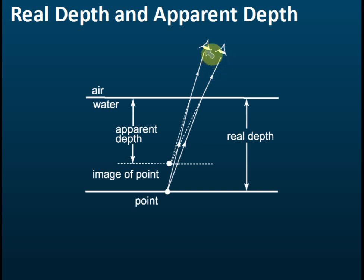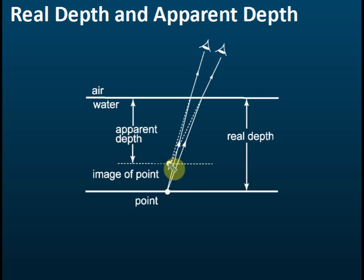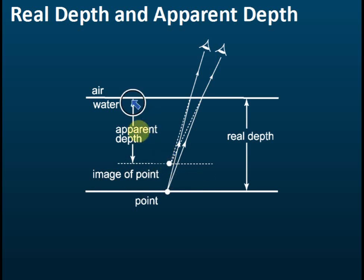So the observer always assumes that the light ray comes from here in a straight line. If it's a straight line, then it comes from a higher position. So when he sees the light rays, he concludes this light ray must come from here, because all light moves in a straight line. So he finds that this point is located higher up — that's what he sees — and the depth he measures is the apparent depth.